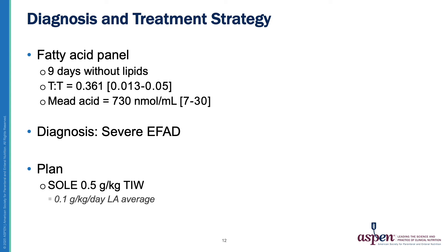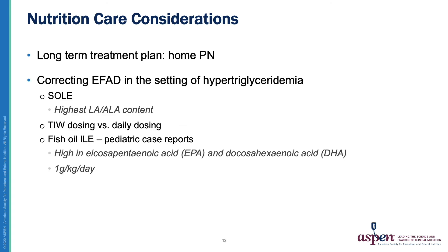The nutrition team restarted a soybean oil lipid emulsion at a dose of 0.5 grams per kilogram three times a week. This would give the patient an average daily dose of 0.1 gram per kilogram per day of LA, the minimum recommended dose in children. Considerations for this patient are that he's going to be on PN long term and will require IV lipids for the foreseeable future. The other major factor is his hypertriglyceridemia. We want to ensure we're providing enough LA and ALA while minimizing his total lipid dose. That's why soybean oil lipid emulsion is the best choice here, as soybean oil has a higher LA and ALA content compared to the same dose of a composite or fish oil lipid emulsion. Additionally, three times weekly dosing rather than daily dosing will give time for triglyceride clearance between the doses.